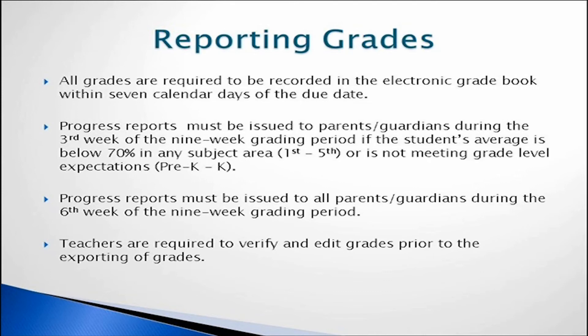When reporting grades, it is the teacher's responsibility to remember all grades are required to be recorded in the electronic grade book within seven calendar days of the due date. Progress reports must be issued to parents and guardians during the third week of the nine-week grading period if the student's average is below 70% in any subject area in first through fifth grade, or is not meeting grade level expectations in pre-kinder or kinder. Progress reports must be issued to all parents and guardians during the sixth week of the nine-week grading period.